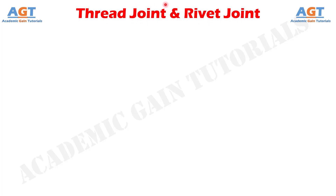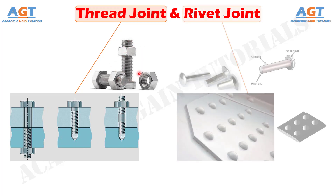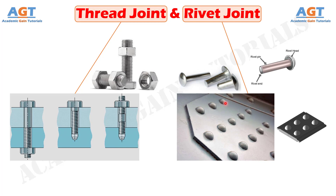Joining is one of the manufacturing processes by which two or more components can be assembled together to unify them. Threaded joints are defined as separable or temporary joints which are used to hold machine parts together by means of threaded fastening such as bolt and nut. A riveted joint is a permanent joining process with mainly two components or parts to be joined, which are held together by a rivet with the head at top and tail at the bottom.